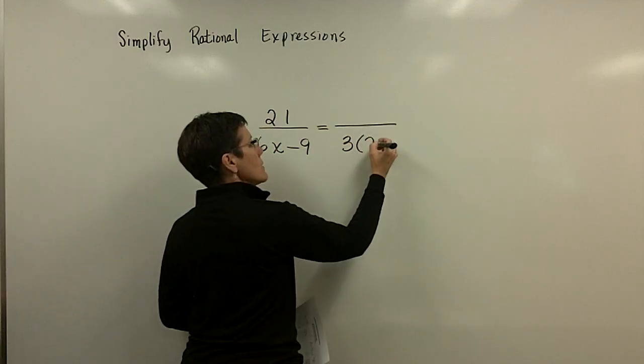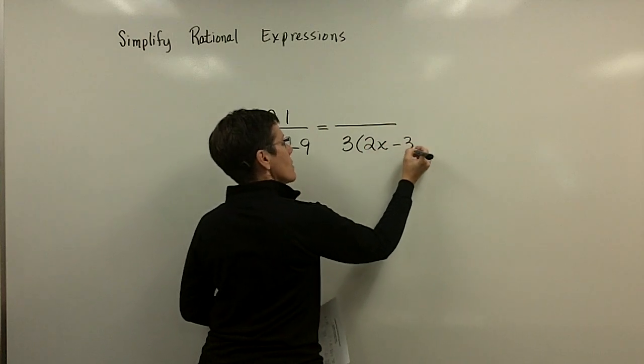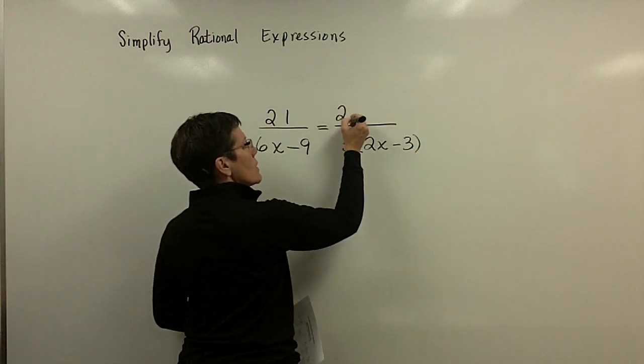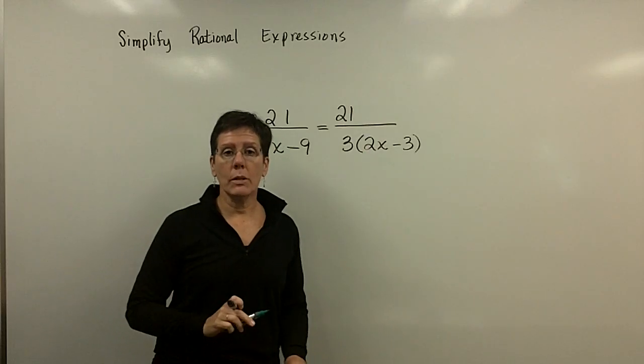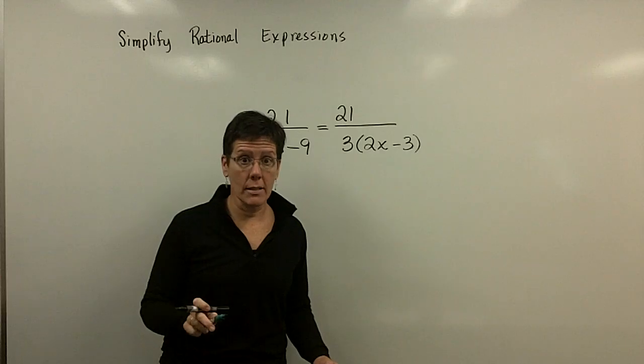And so when I do that, I'll need a 2x here minus a 3. So I'll have that binomial. And upstairs, I have the number 21. If I wanted to, I could write 21 as 3 times 7, so I could show that in its factored form.